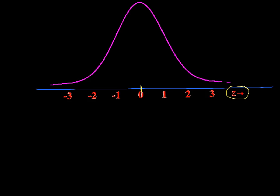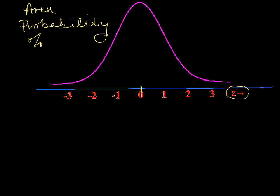What you're going to do first is calculate three things: the area under the curve of a certain region, the probability of being greater than or less than a certain z-score, and the percentile ranking. These three numbers represent the same thing. The only difference is that a percentile merely takes the decimal answer for area or probability and converts it into a percent.